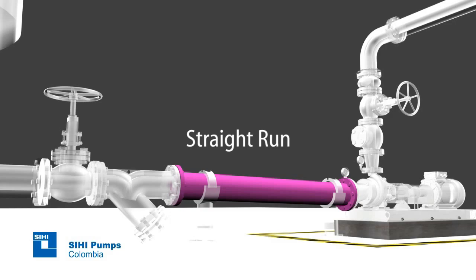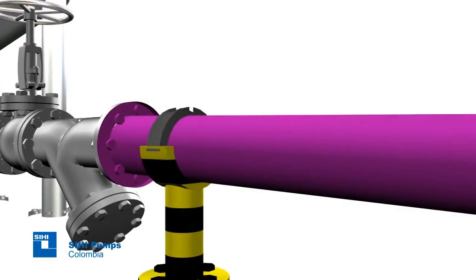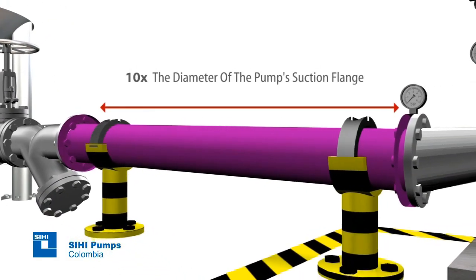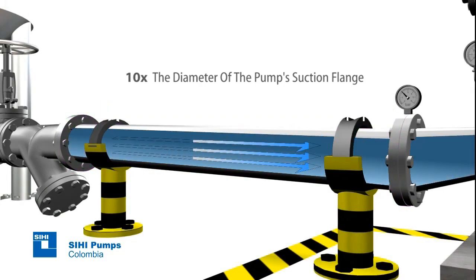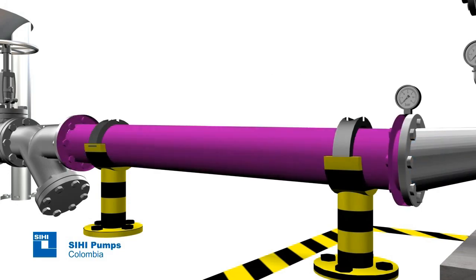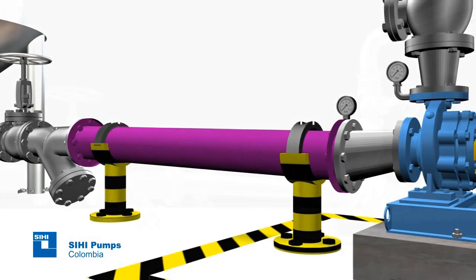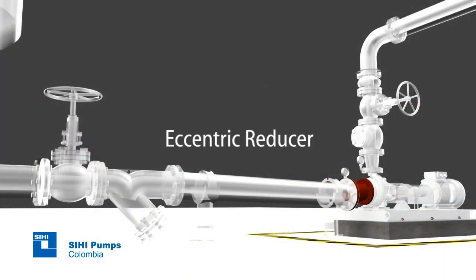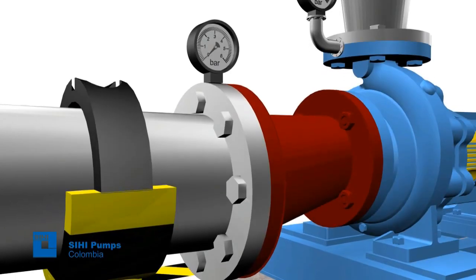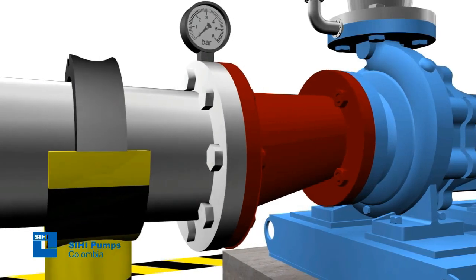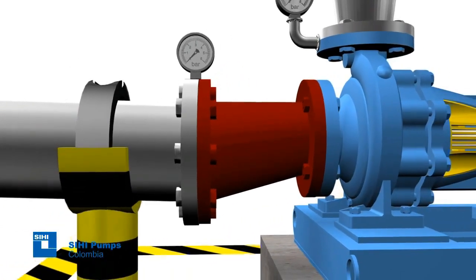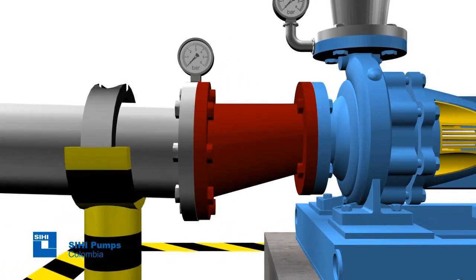Straight run: This pipe must have a length of at least 10 times the diameter of the pump's suction flange, and it is used to deliver a straight and uniform flow to the pump inlet. In some specific cases, it should have a greater length. Eccentric reducer: Whenever the diameter of the suction pipe is greater than the diameter of the pump suction, an eccentric reducer must be provided to avoid air pocket formation.